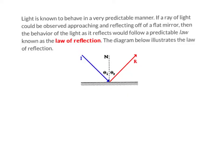Light is known to behave in a very predictable manner. Let's say you have a ray of light. It will be observed approaching and reflecting off a flat mirror. The behavior of the light as it reflects follows a predictable law known as the law of reflection. Reflection means to bounce.